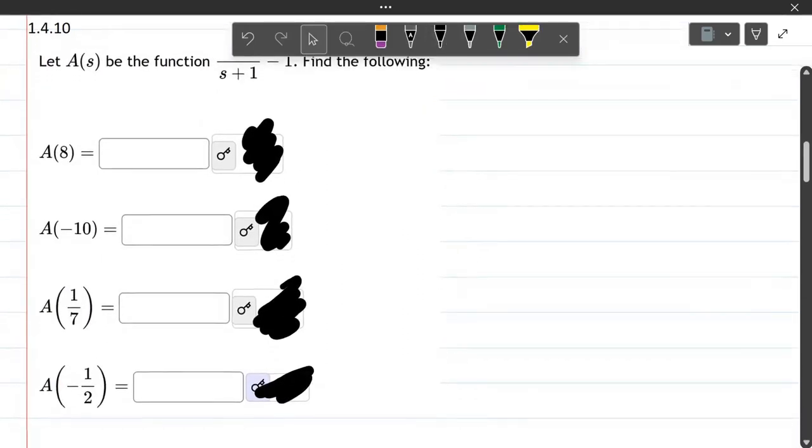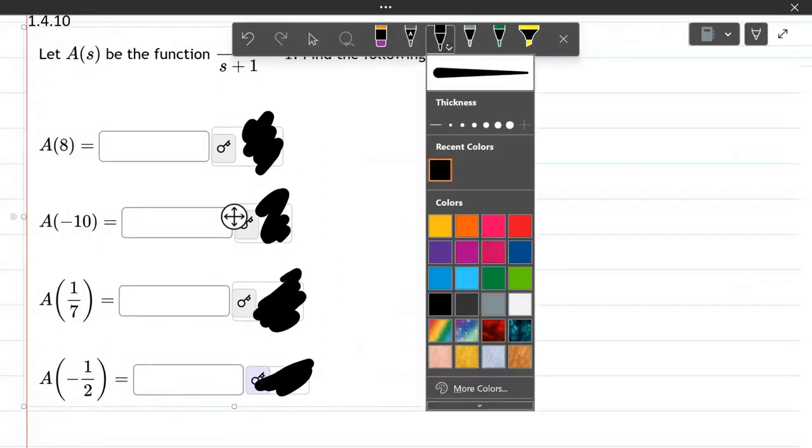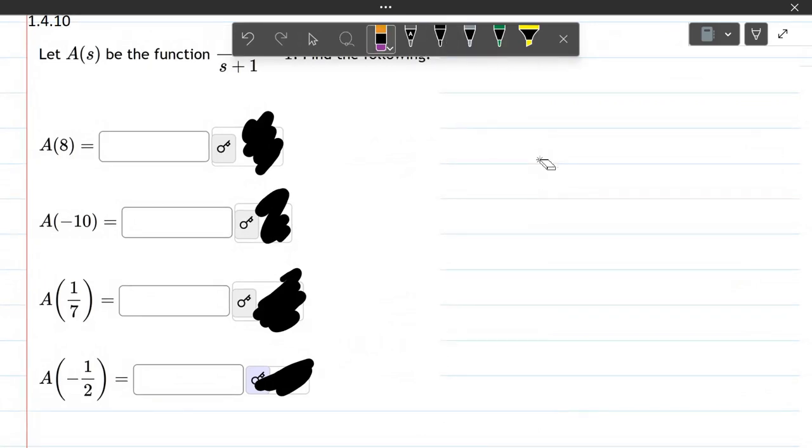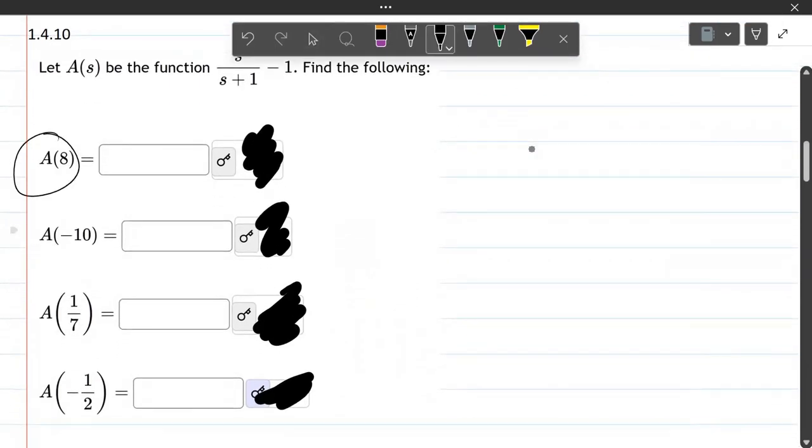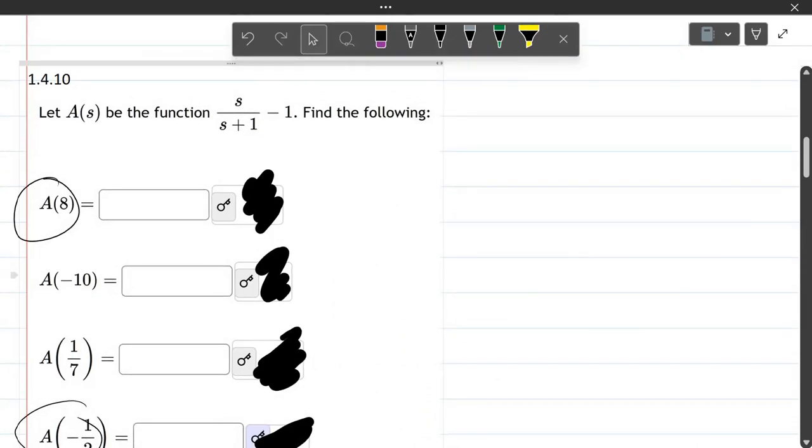Alright, we won't find them all, let's just find two of them. So we'll go ahead and do the A of 8 right here and then we'll do the negative fraction. So we'll do those two. The other two will be very similar except different.